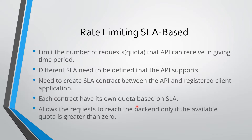Each contract will have its own quota based on the SLA. Whatever SLA we are selecting when we are defining the contract, the quota will be allocated based on that SLA to the registered client. Once the registered client invokes the API, the policy will allow all the requests to reach the backend if the available quota is greater than zero. If there is no quota available for that time period, then those requests will be blocked and the client needs to wait for the next time window.